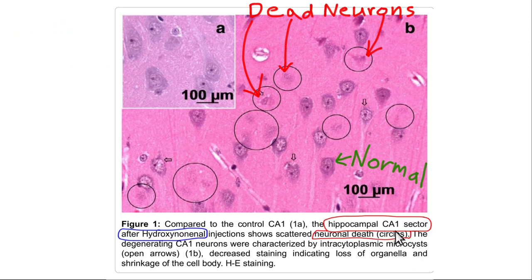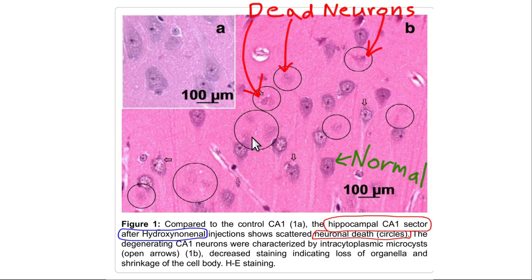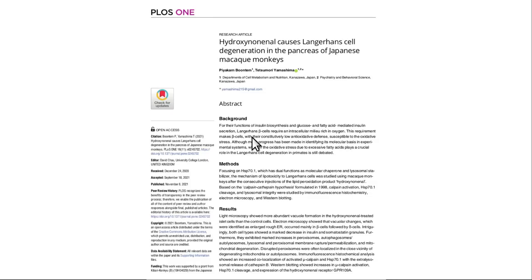In the hippocampus — the memory center — normal neurons show distinct margins, while dead neurons fade into oblivion and are recycled by macrophages. There is nothing good about omega-6 oils. You should avoid them as much as possible; don't make consuming them a habit.